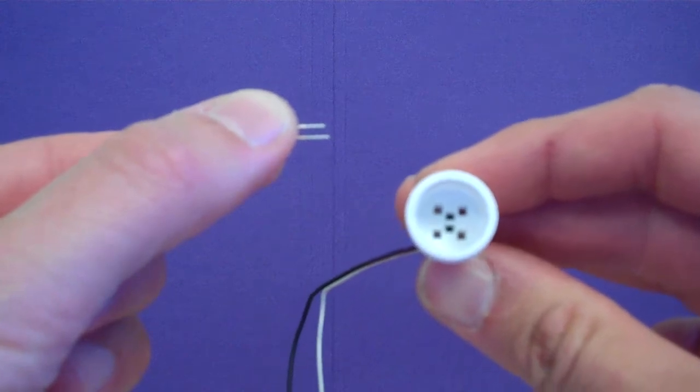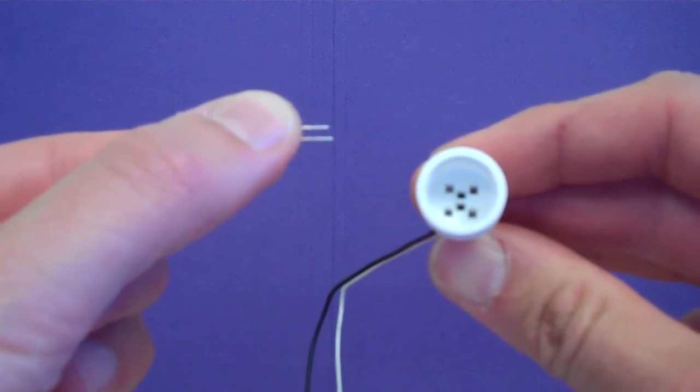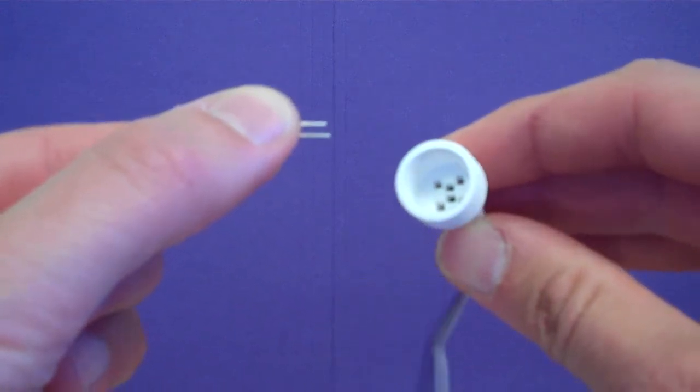Take your 10 millimeter socket and align the leads with the hole pattern within the socket.